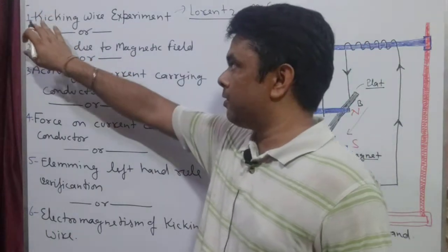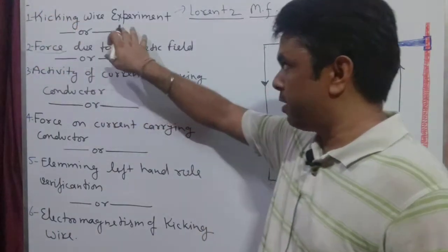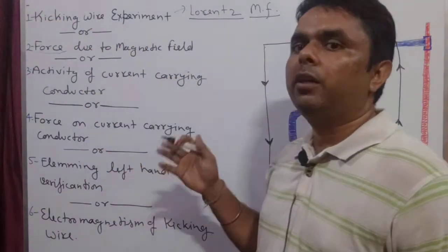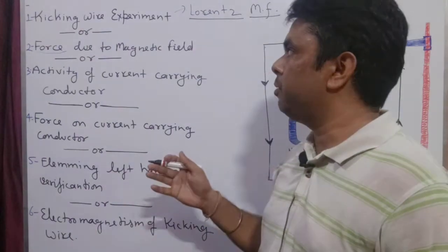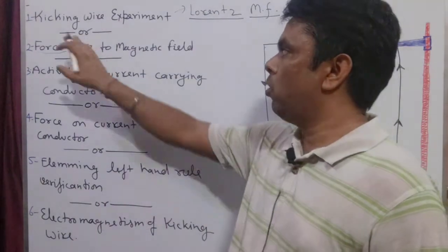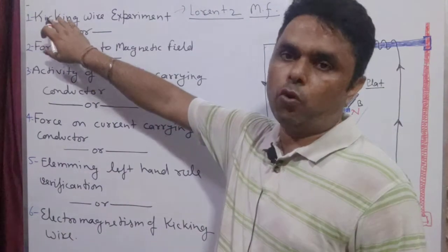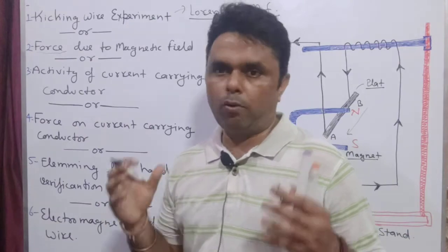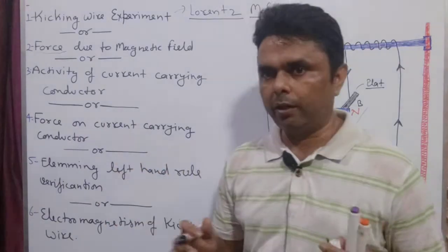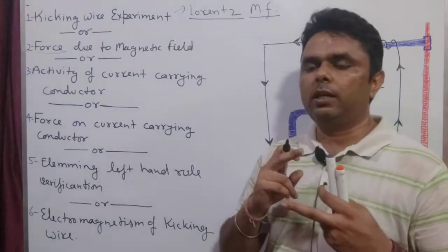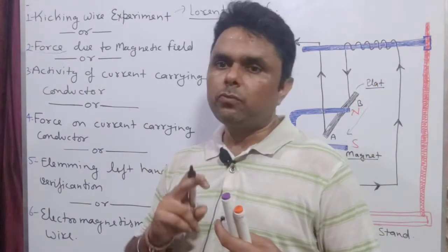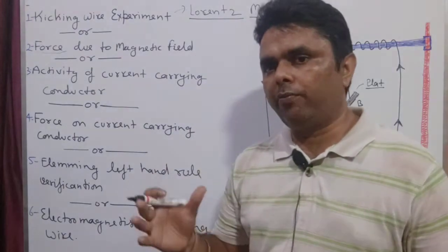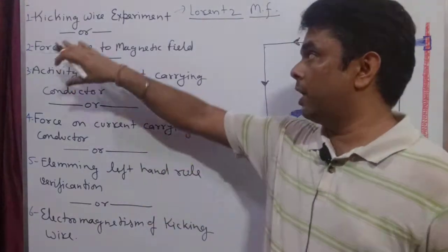So basically in the kicking wire experiment, we know the kicking effect and the kicking force. If there is a magnetic field, then there is a force. So we know the kicking effect and kicking force — that's kick one: the kicking wire experiment.